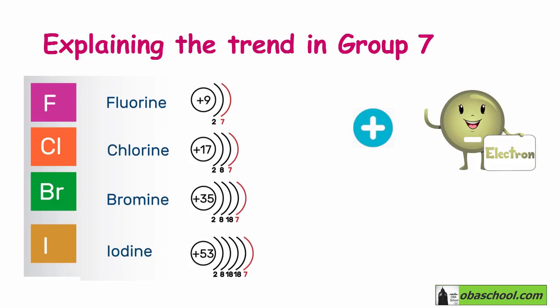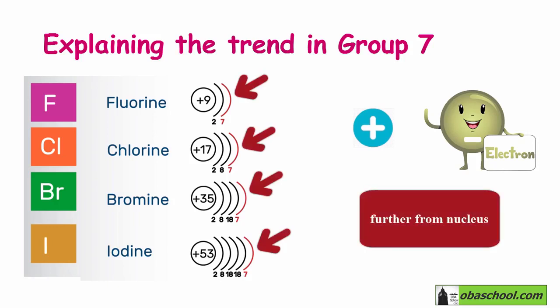As we move down the group, the outermost shell electrons will become further away from the positive nucleus. The nucleus holds a positive charge due to the presence of protons, and as the distance increases, it will become harder to attract and gain an extra incoming electron.